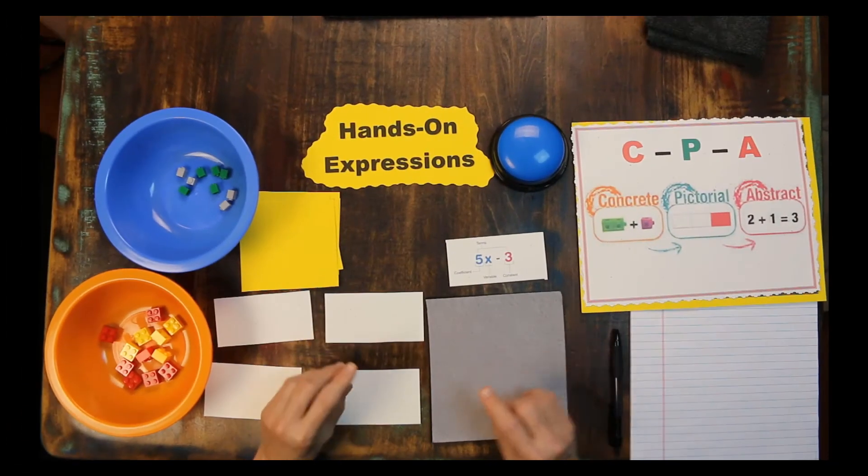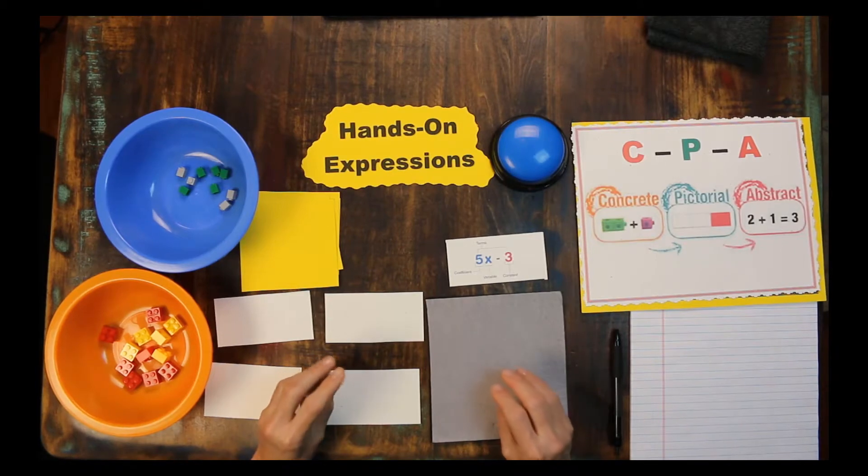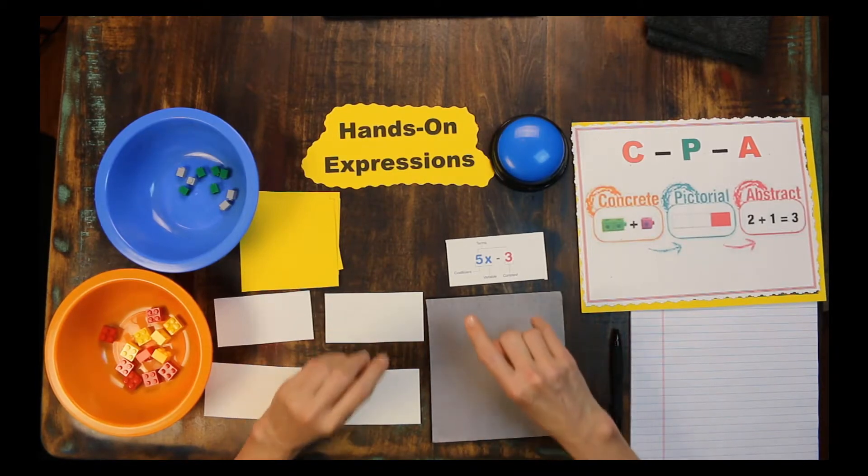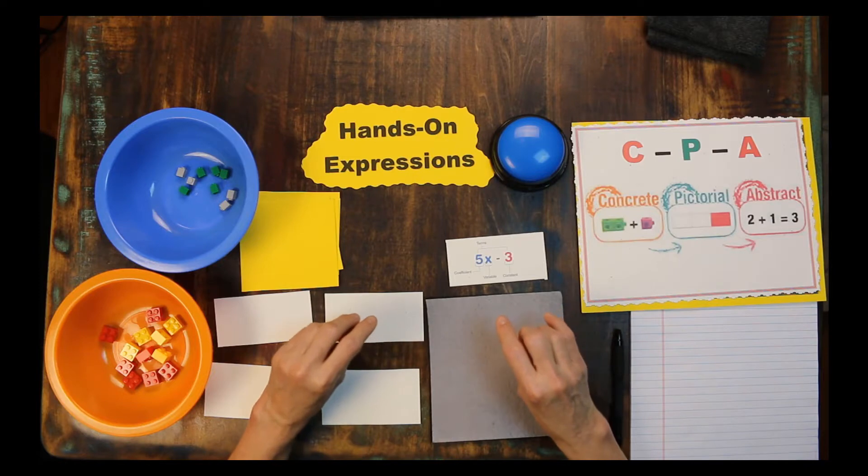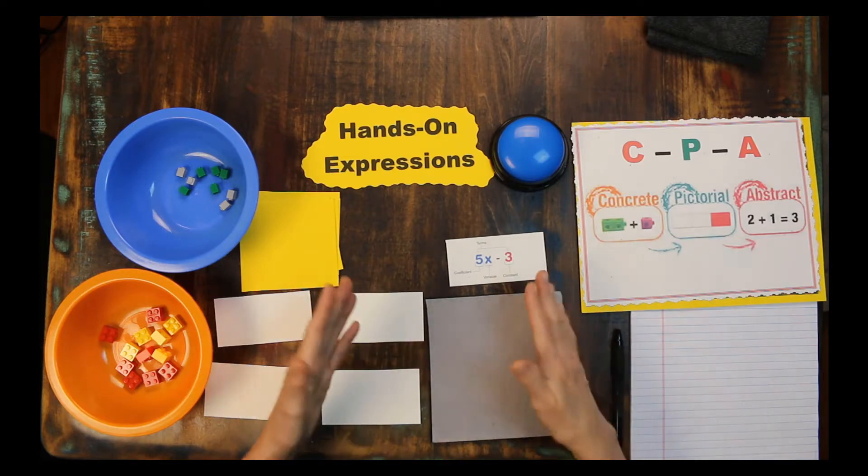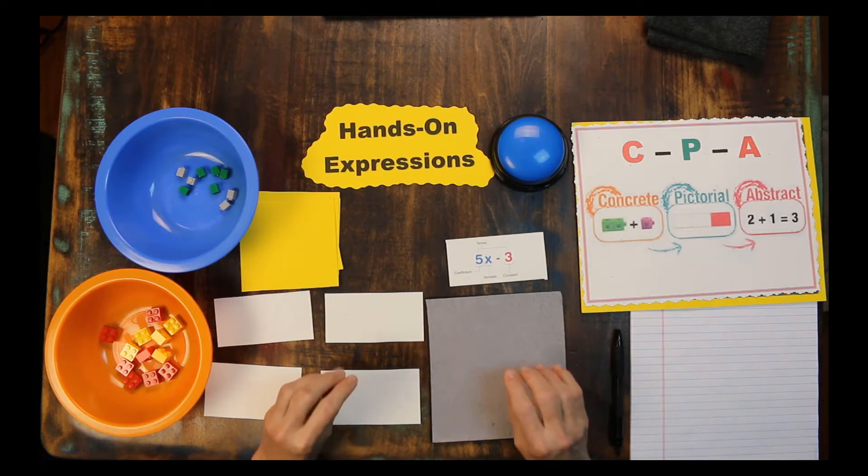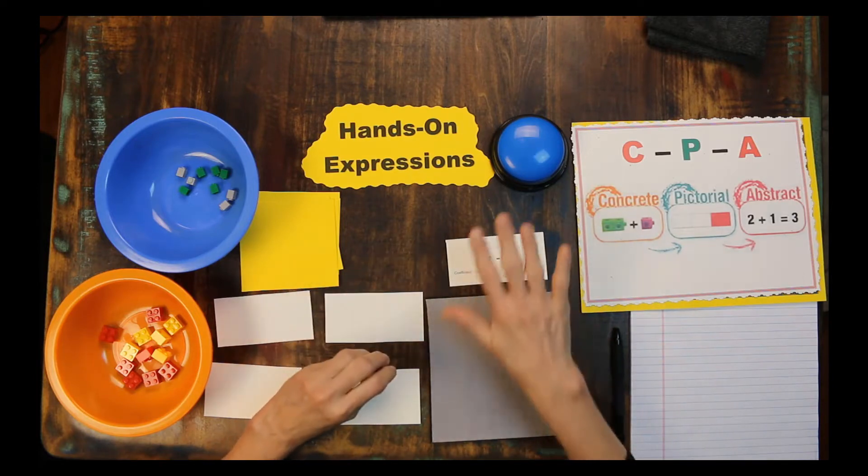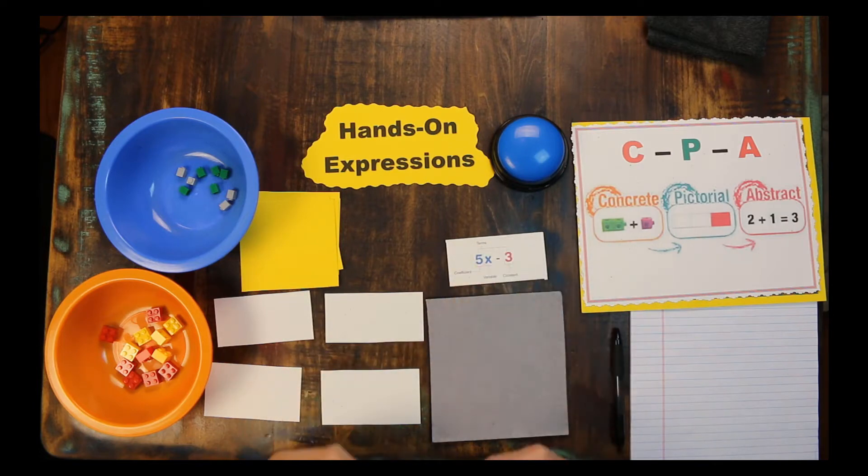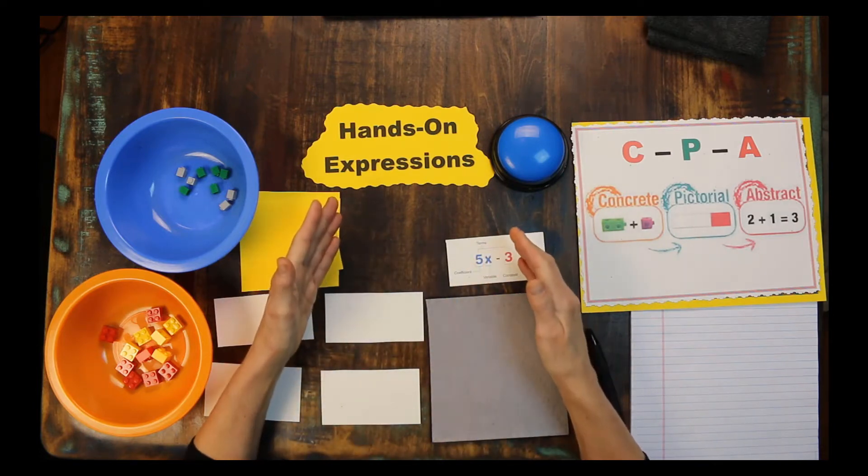What if someone said to you: represent and solve multi-step problems involving the four operations with whole numbers using equations with the letter standing for the unknown quantity? I bet some of you didn't even finish listening to the entire statement. It's actually a fifth grade math standard.